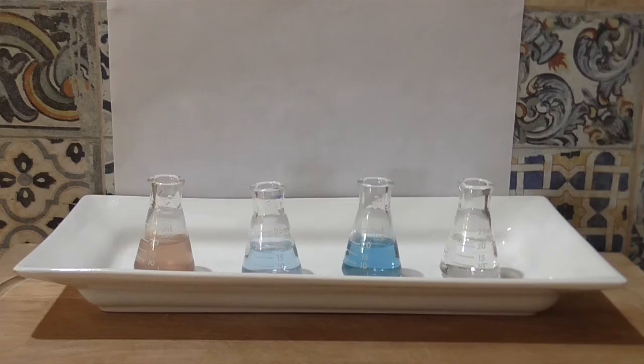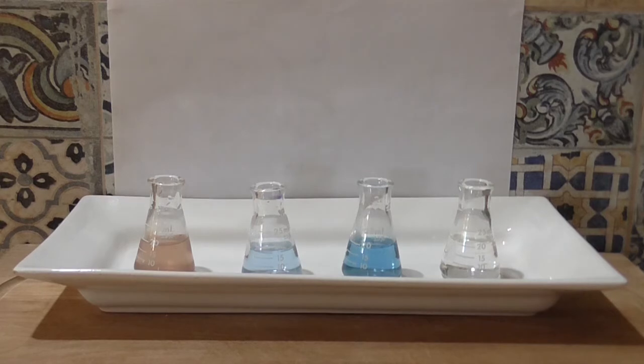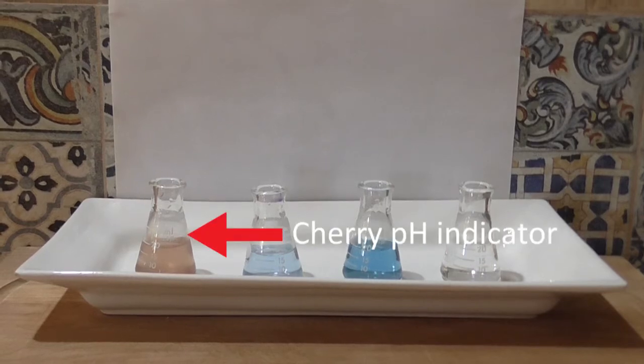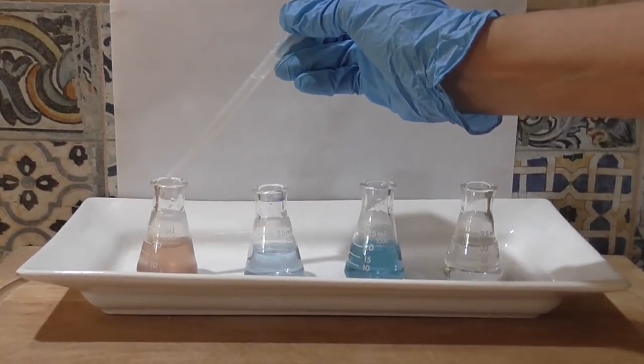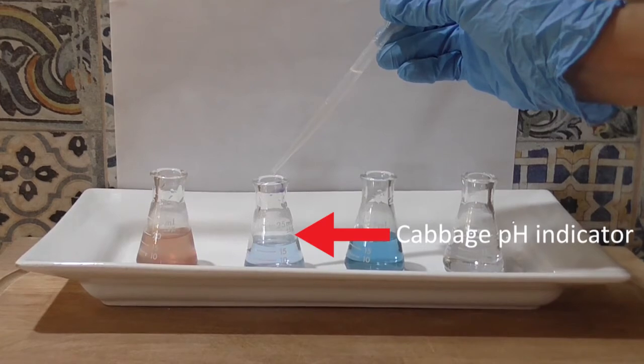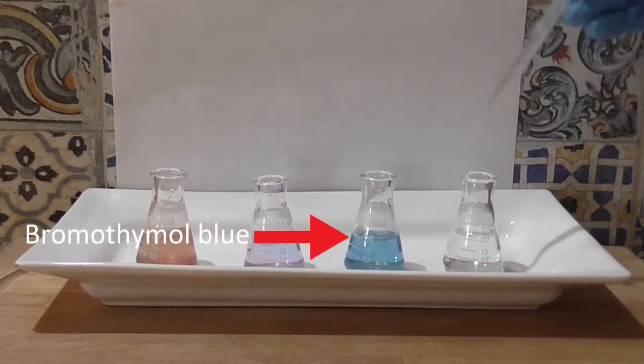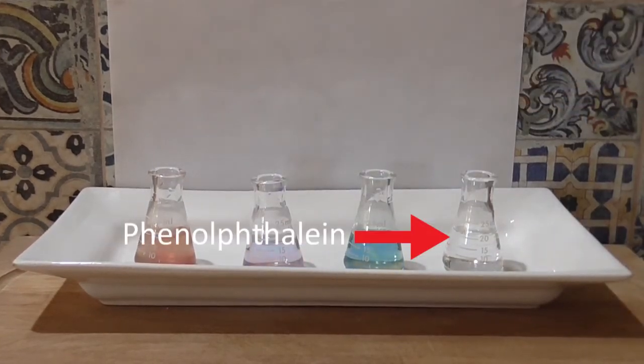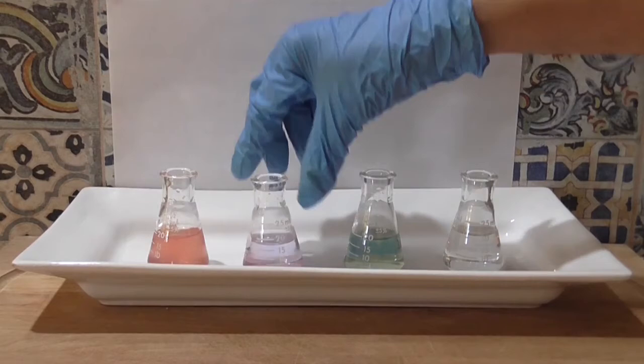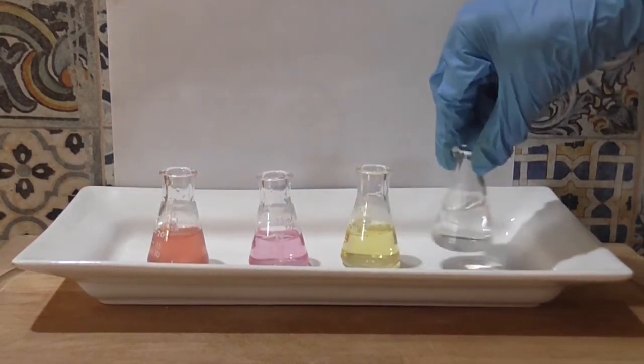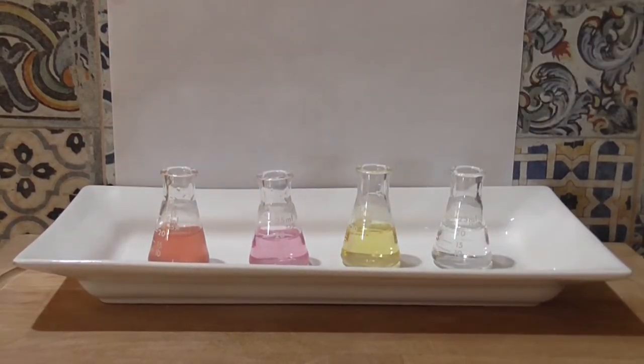Once again I have my four flasks with the pH indicators, but this time I'm about to add a drop or two of a one molar solution of hydrochloric acid to each of the flasks. The hydrochloric acid is obviously the acid. I give the flasks a quick swirl. Press pause to note any observable color changes.